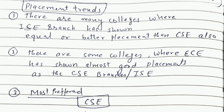Looking at the placement trends I've reviewed across colleges, CSE is the most preferred branch. But in many top-notch colleges, I've seen that the ISC branch placement was equal to or better than CSE in some of them. ISC is also an important branch and has been around for the last 20 years. CSE, ISC, and ECE — all three branches have been around for 20 to 30 years. In some colleges, ECE placements are also as good as CSE or ISC placements.